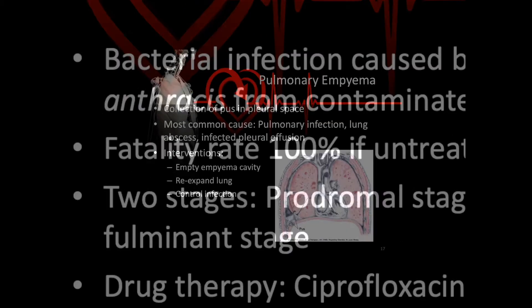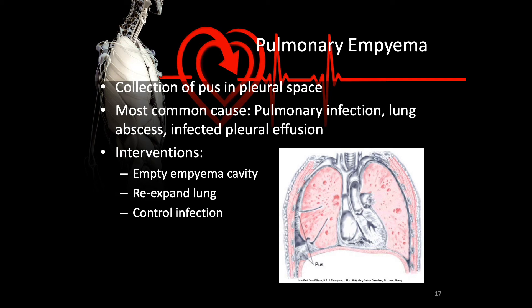Empyema is an infection of the pleural space. The most common causes are pulmonary infections, lung abscesses, and infected pleural effusion. Interventions are to empty the empyema cavity by inserting a chest tube, re-expanding the lung, and controlling the infection through proper hygiene and antibiotics.